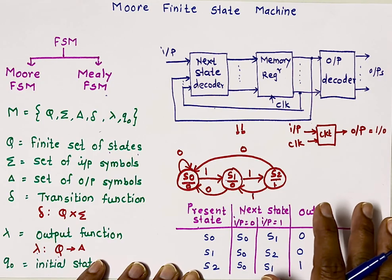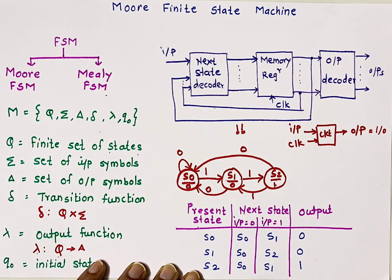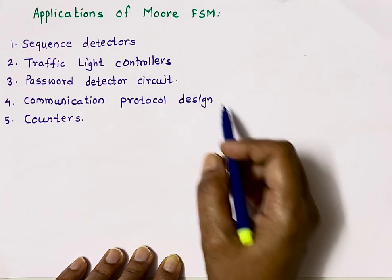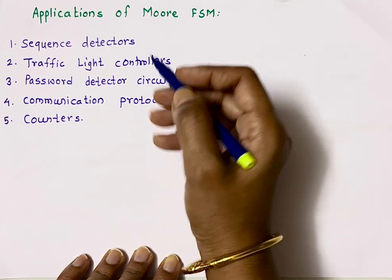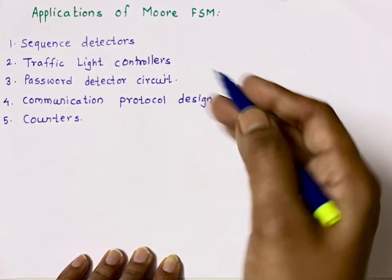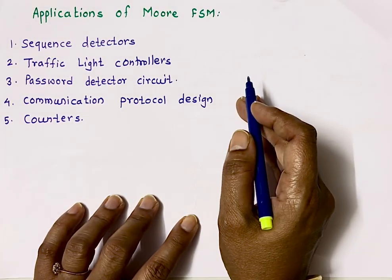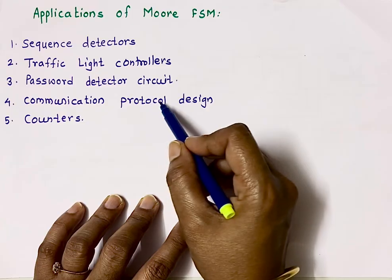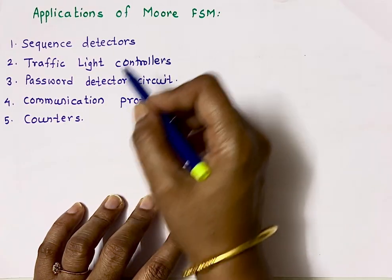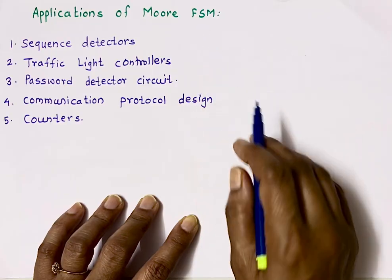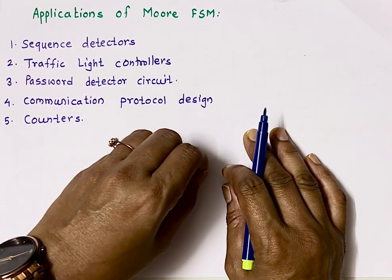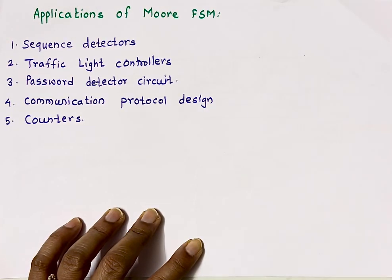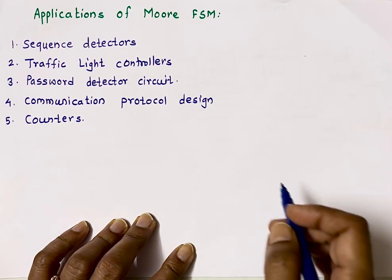This is all about Moore machine. Now let's discuss applications of Moore FSM. Applications are: sequence detectors, traffic light controller — in a traffic light controller, based on present state the next state can be determined, such as after red comes green — password detector circuit, and communication protocol design. In case of counters, we also use Moore FSM. In Moore machine, output depends on present state and it has a limited number of states.